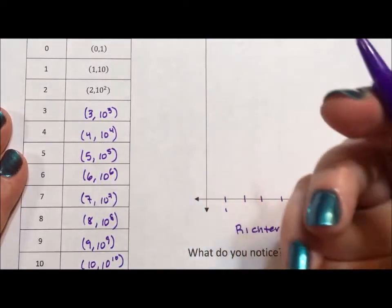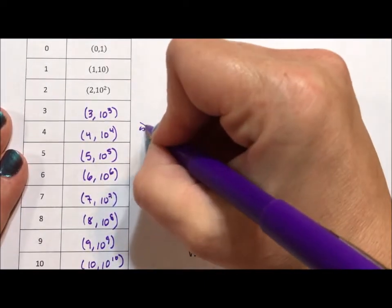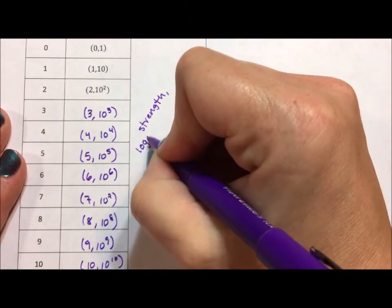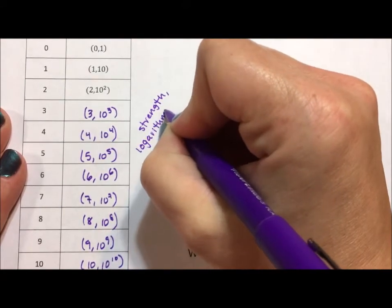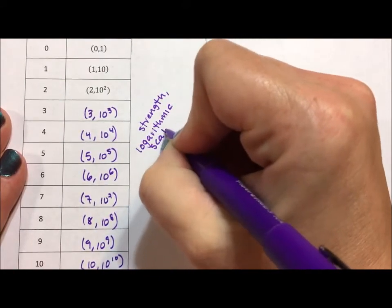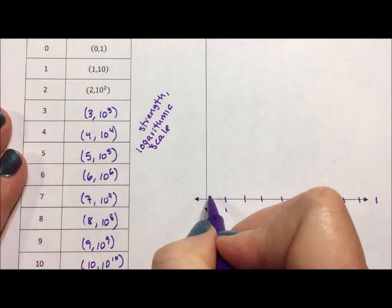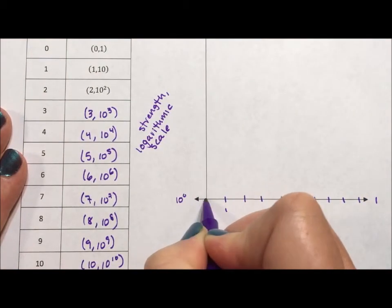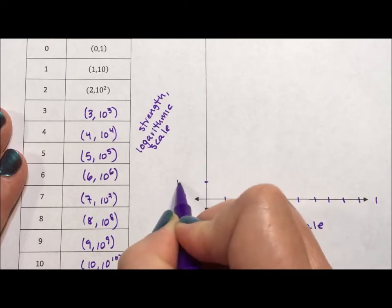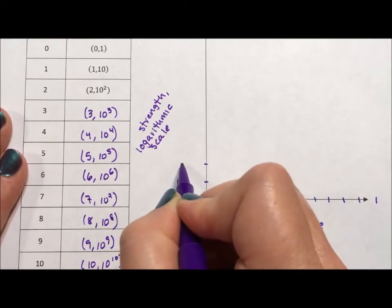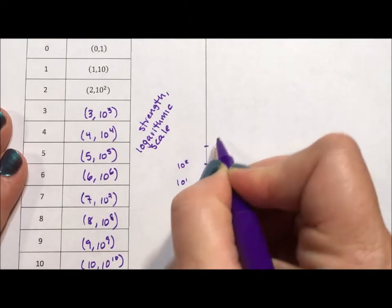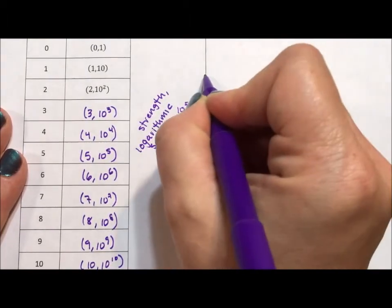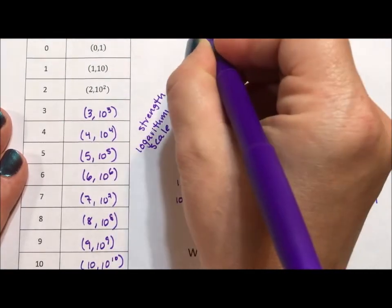And up here, because we have the strengths with a logarithmic scale. A logarithmic scale means each tick mark is, so this right here is 10 to the zero, which represents 1. This right here is 10 to the first power, so it's 10. This is 10 squared, 10 cubed, 10 to the fourth, 10 to the fifth, 10 to the sixth, 10 to the seventh, 10 to the eighth, 10 to the ninth.